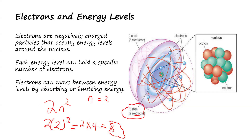So energy can move between energy levels by absorbing or emitting energy. Therefore, electrons of the atom can move from one energy level to another — from one shell to another — by either absorbing or emitting energy. So when energy is emitted or energy is absorbed, electrons can move from one shell to another.